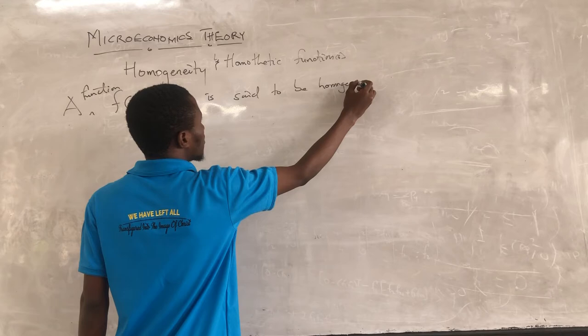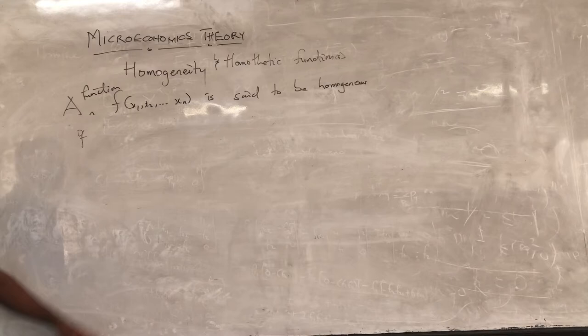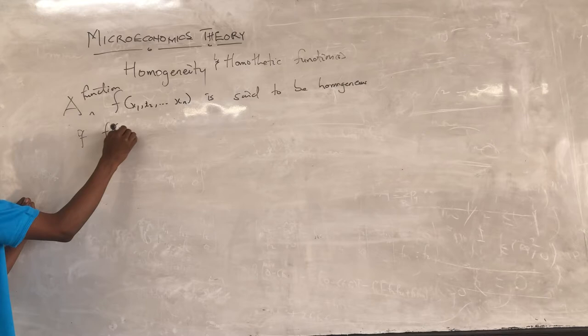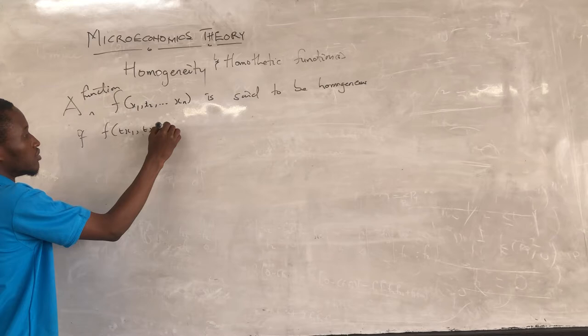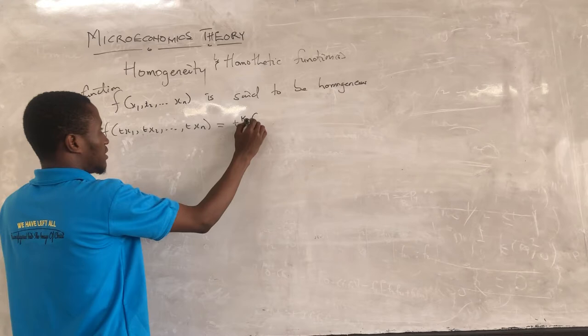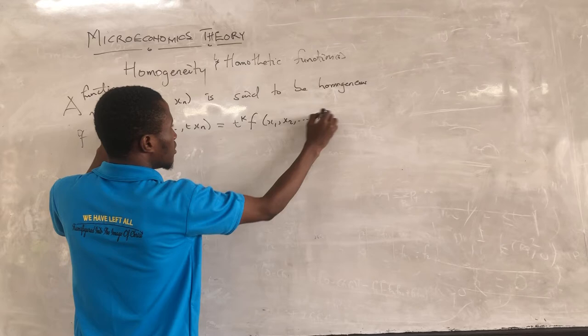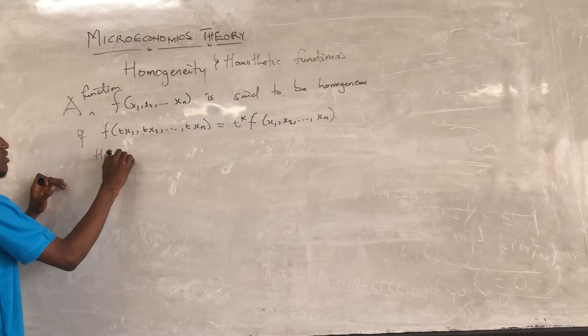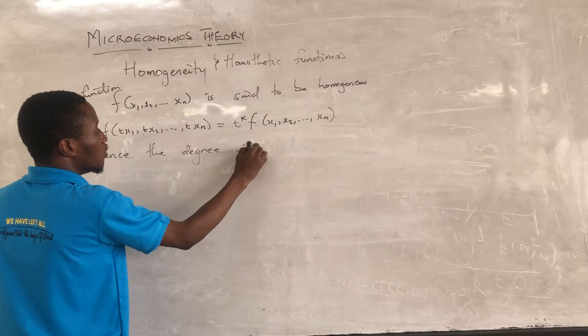A function is said to be homogeneous if, by introducing a scalar t to the input of the function — so t·x1, t·x2, ..., t·xn — I end up getting t to the power k times the original function f(x1, x2, ..., xn). The degree will then be k.